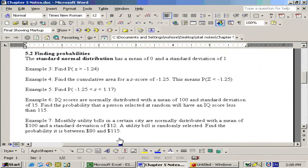On problem example 7, it says monthly bills in a certain city are normally distributed with a mean of 100 and standard deviation of 12. Find the probability that the monthly bill is between 80 and 115.